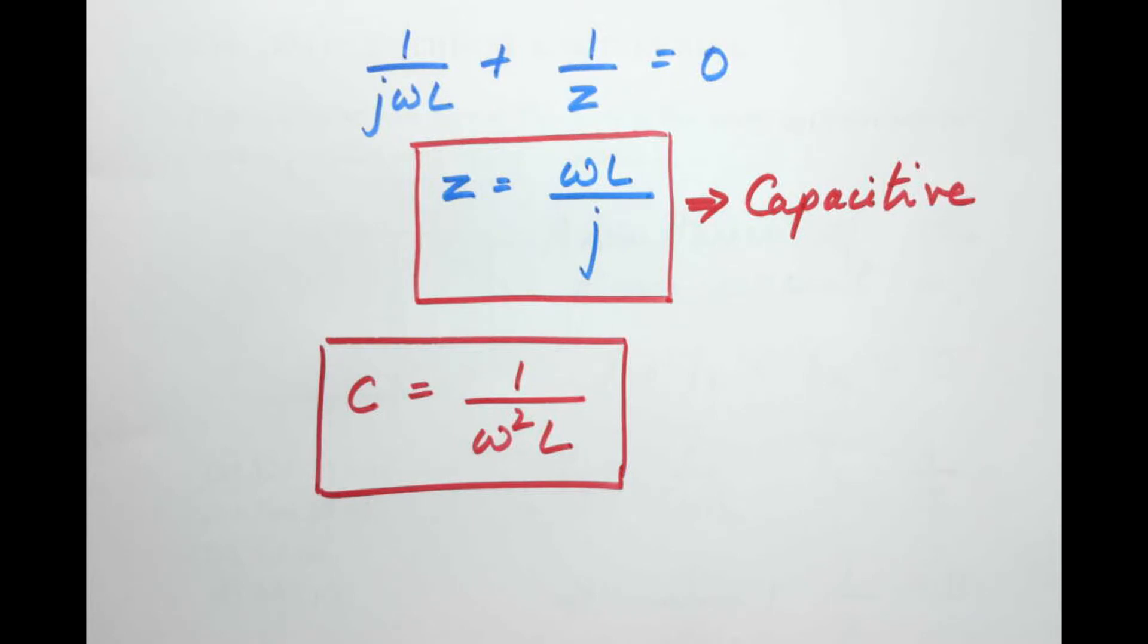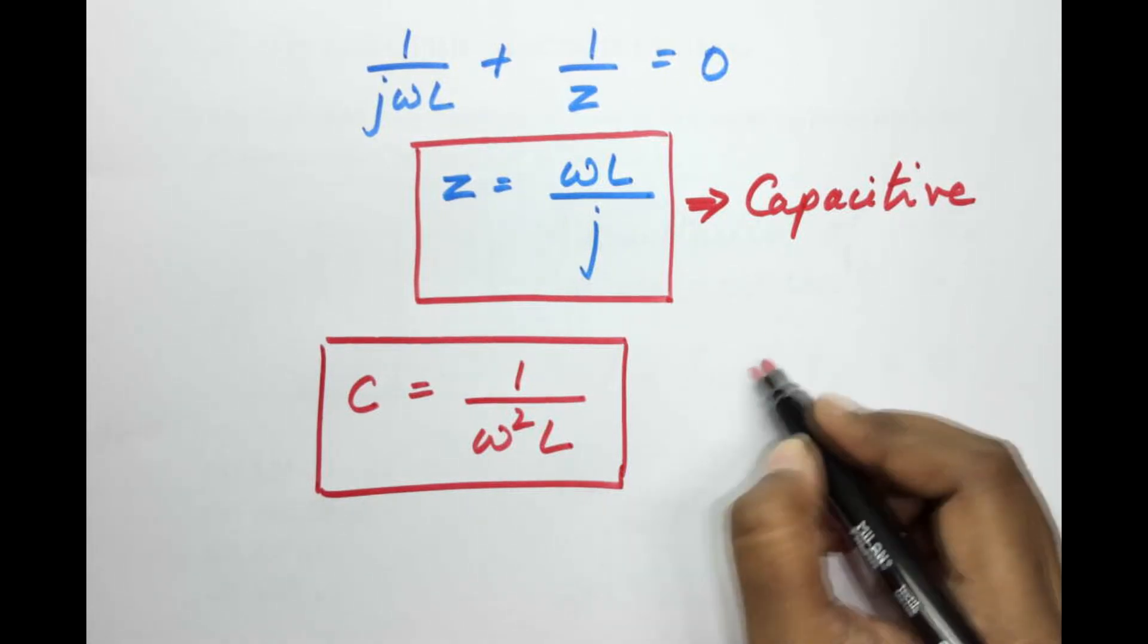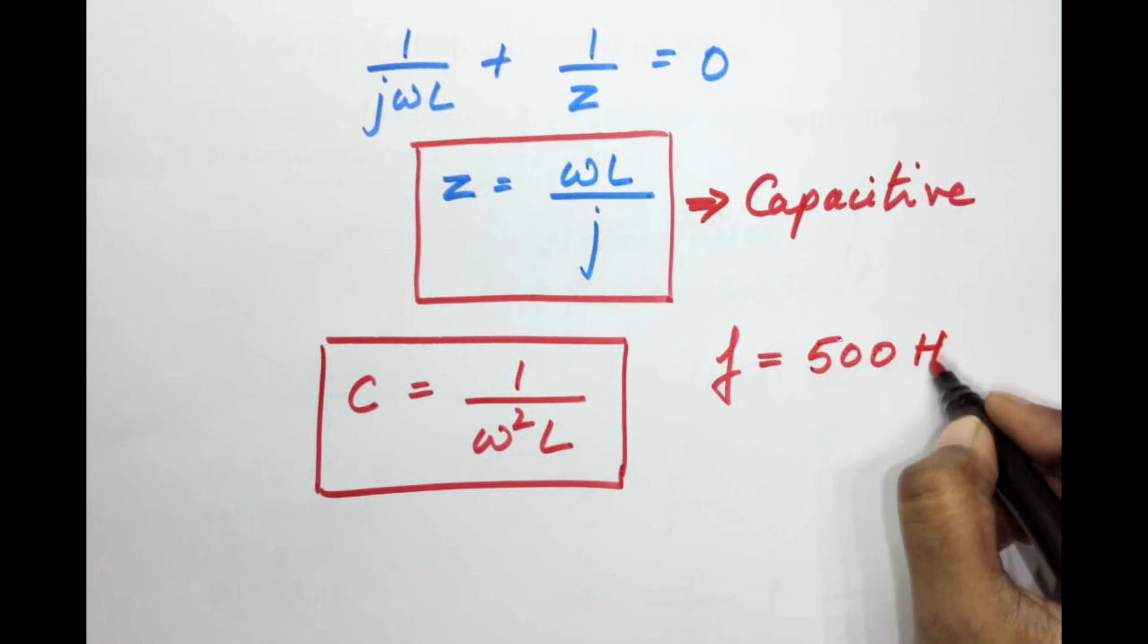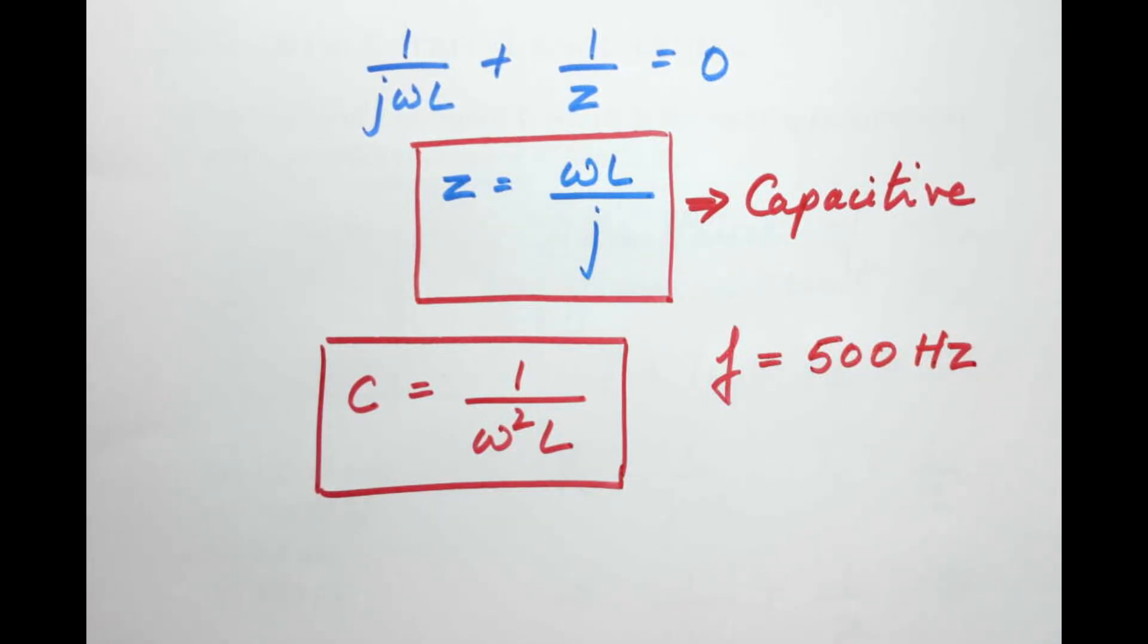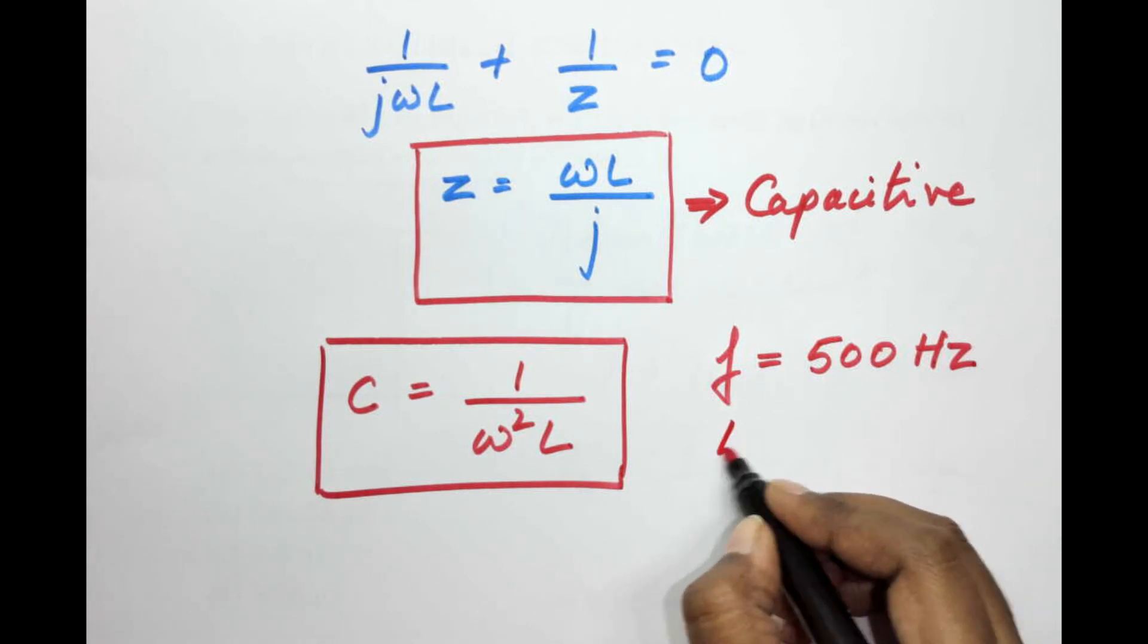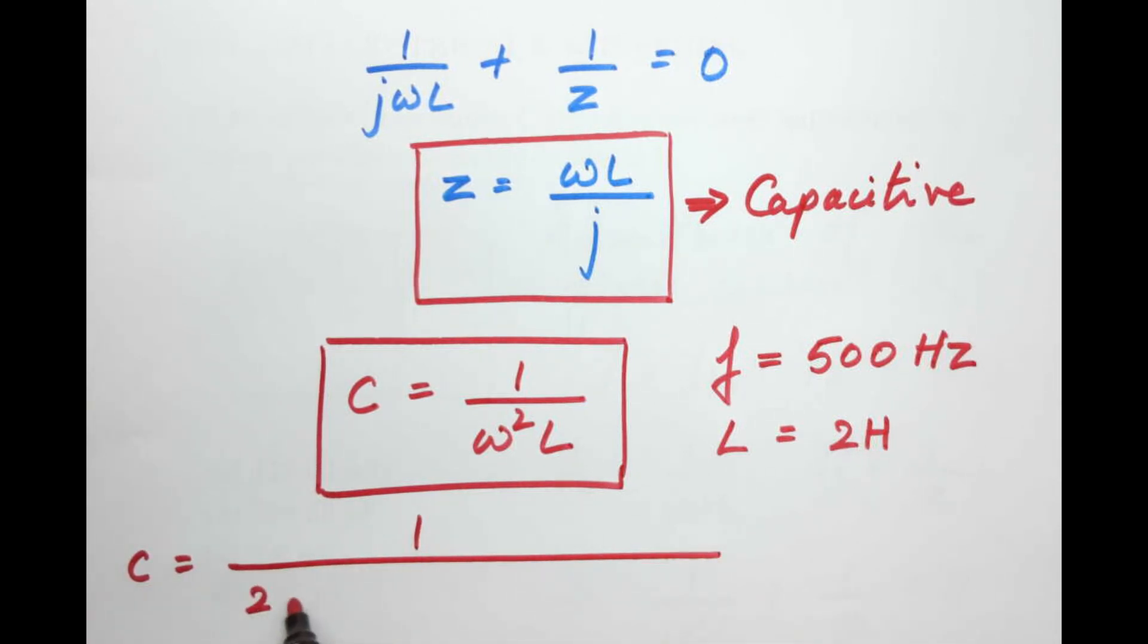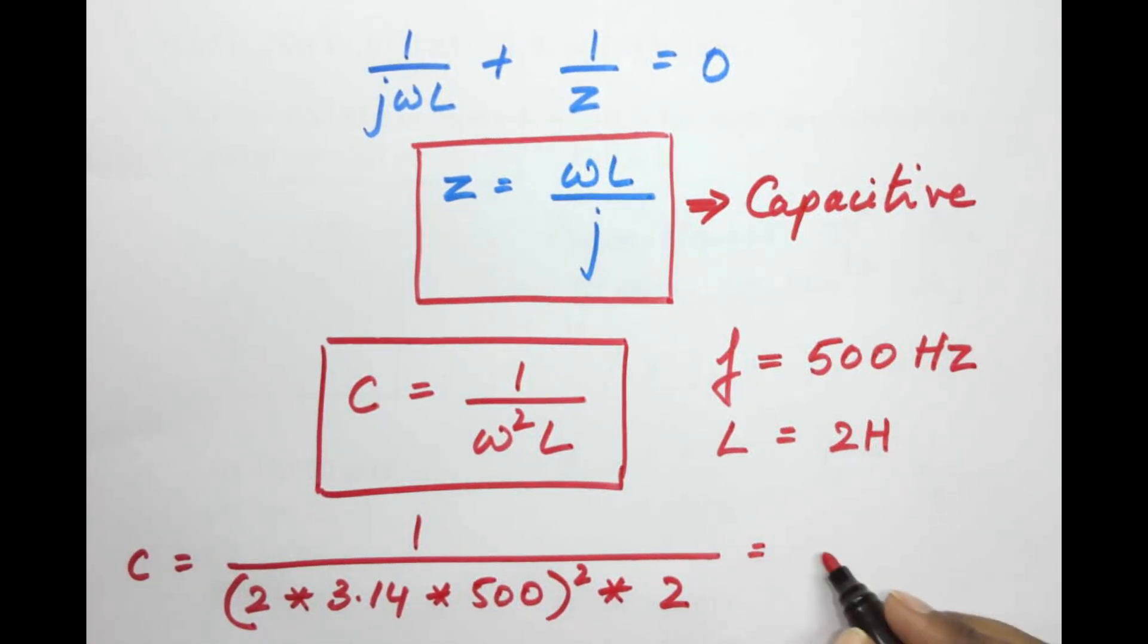So we have the values already given to us. We have ω given as 500 hertz, or I'm sorry this is frequency f. We have the frequency as 500 hertz and we have the value of inductance given to us as 2 henry. So let's substitute the values into the capacitor expression. C equals 1 divided by 2π, which is 3.14 times frequency 500. This is ω = 2πf, into 2.